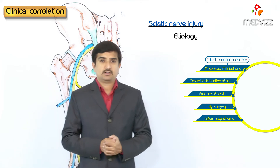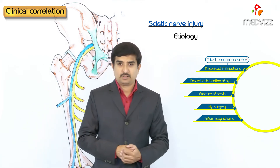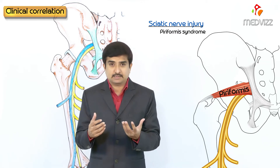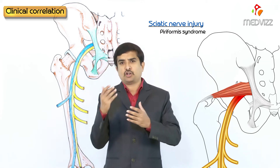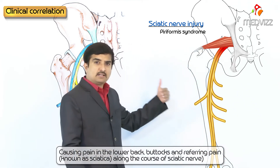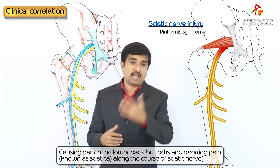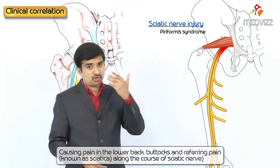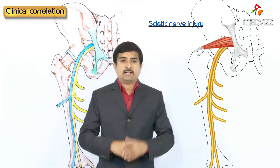Piriformis syndrome is a condition in which the piriformis muscle irritates and causes pressure on the sciatic nerve, causing pain in the lower back and buttocks, and referring pain known as sciatica along the course of the sciatic nerve in the posterior aspect of the thigh.